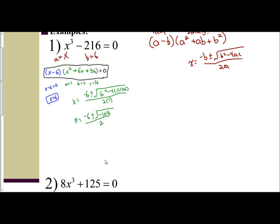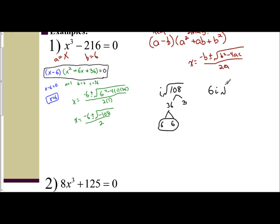Let's simplify that radical. The negative comes out and becomes an i. Negative 108 is 36 times 3, and 36 is 6 times 6. Remember, you don't have to factor into prime numbers — you factor until you get a pair. Since I have a pair of 6s, I can take one out, giving me 6i with a 3 inside. So I have x equals negative 6 plus or minus 6i square root of 3 over 2.